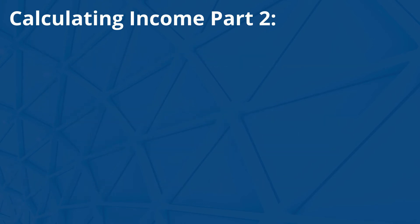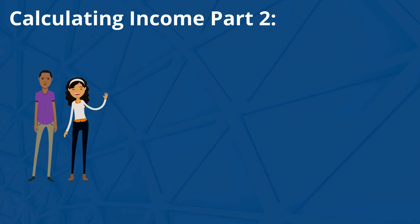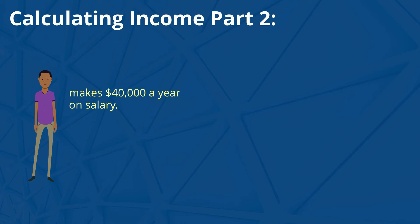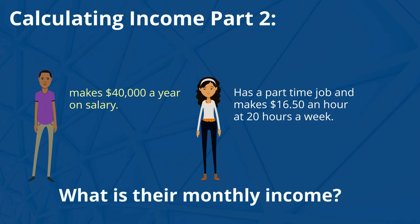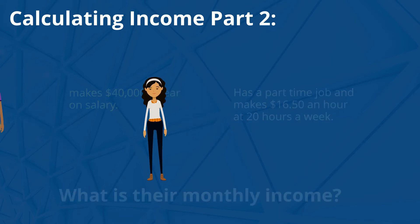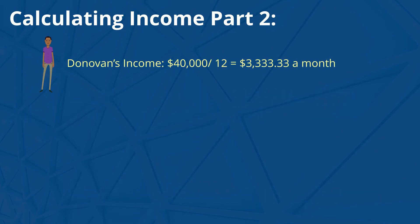Let's take a look at another example. Donovan and Kim are going to purchase their new home together. Donovan makes $40,000 a year on salary. Kim has a part-time job and makes $16.50 an hour at 20 hours a week. What is their monthly income? Donovan's income: $40,000 divided by 12 is equal to $3,333.33 a month.